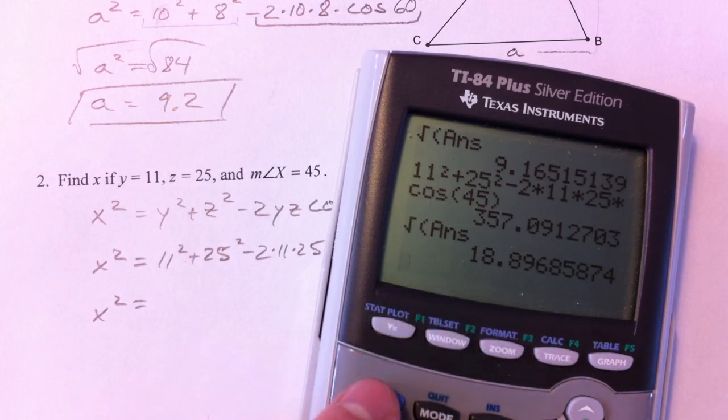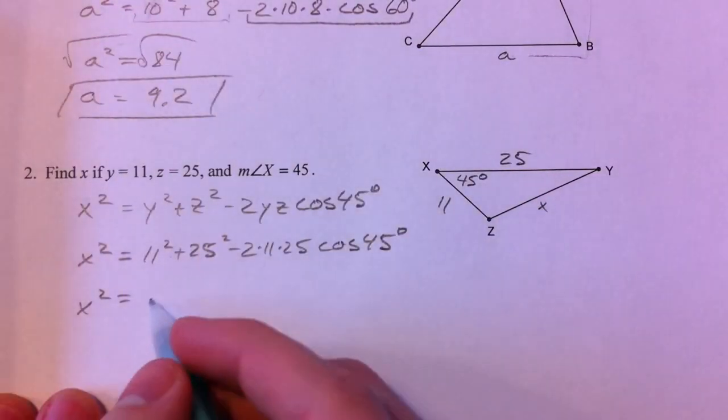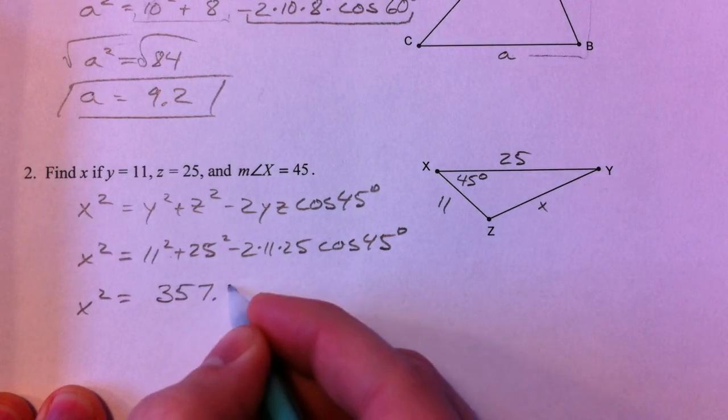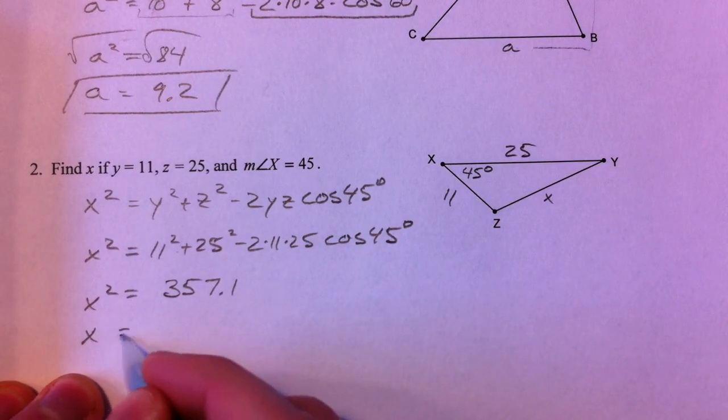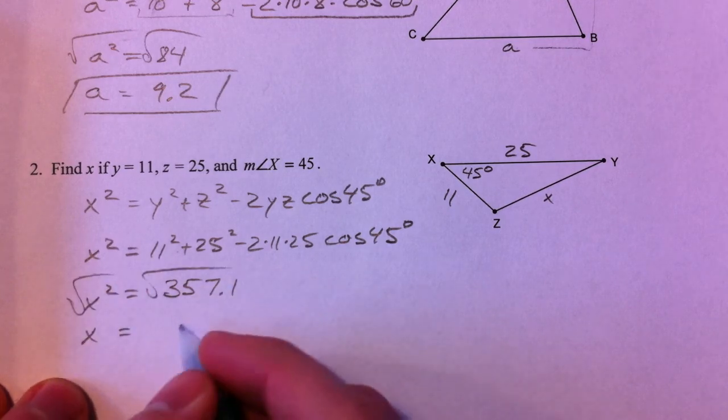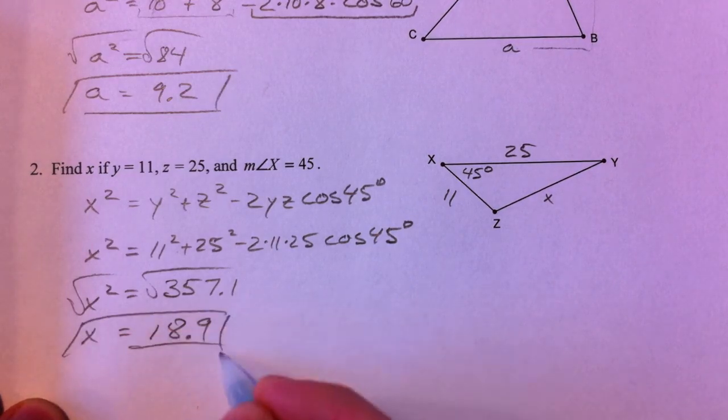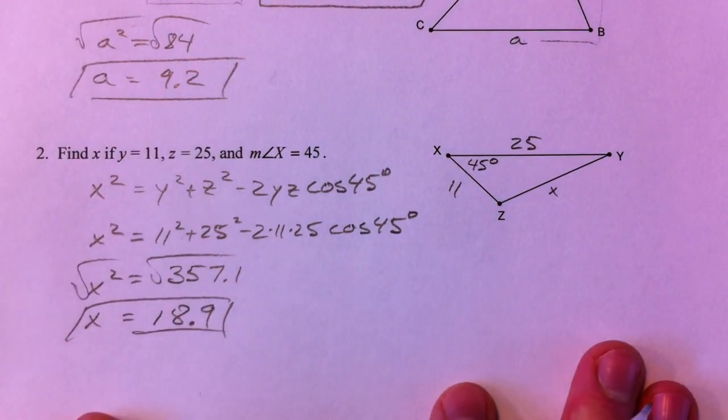Notice how we're getting answer by hitting second answer. And so 357.1, and then I take the square root of it, and I get 18.9. So how'd we do?